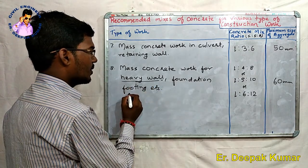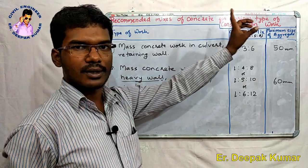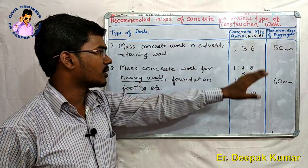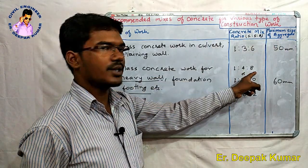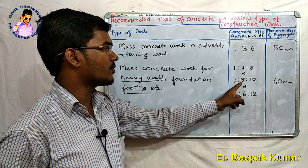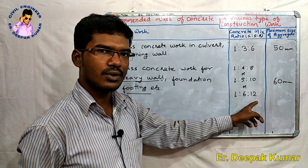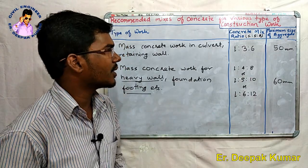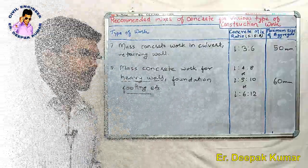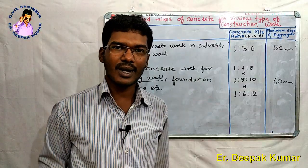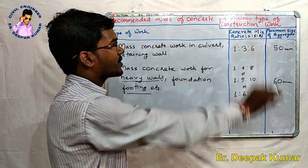The eighth and last type is mass concrete work for heavy wall foundations and foundation footings. The mix ratio can be 1:4:8, or 1:5:10, or 1:6:12. The maximum size of aggregate is 60mm.